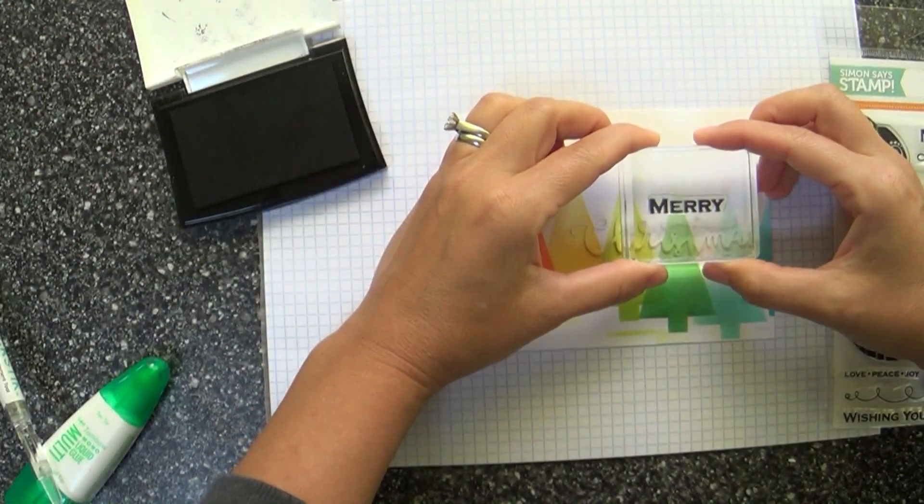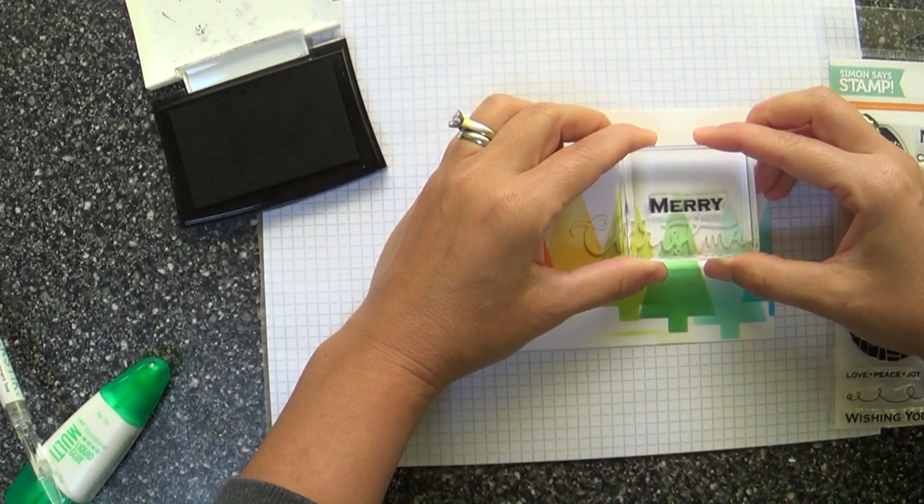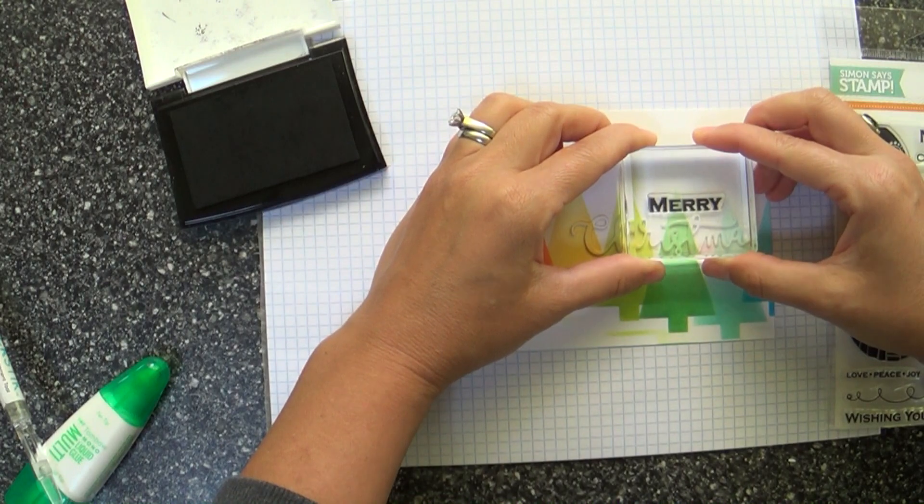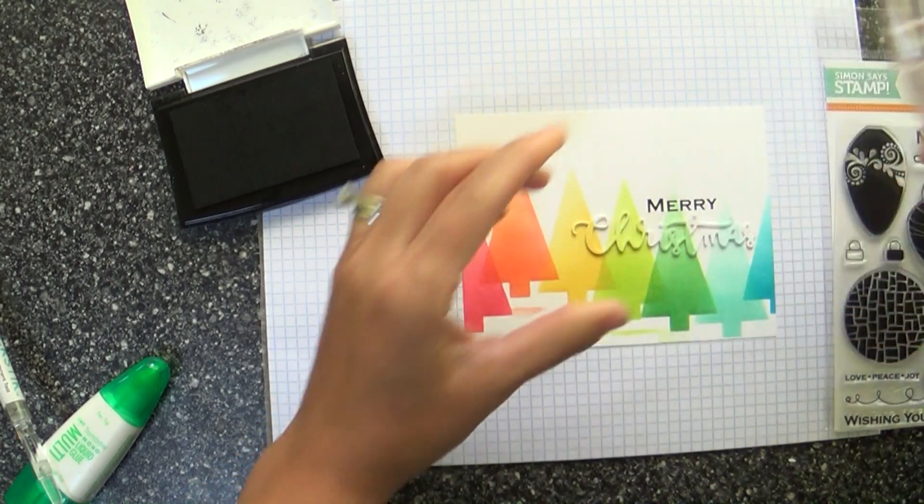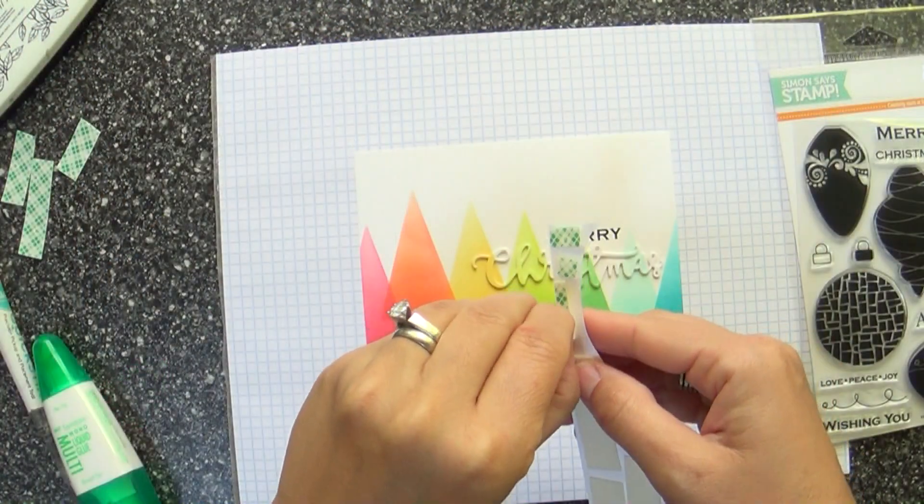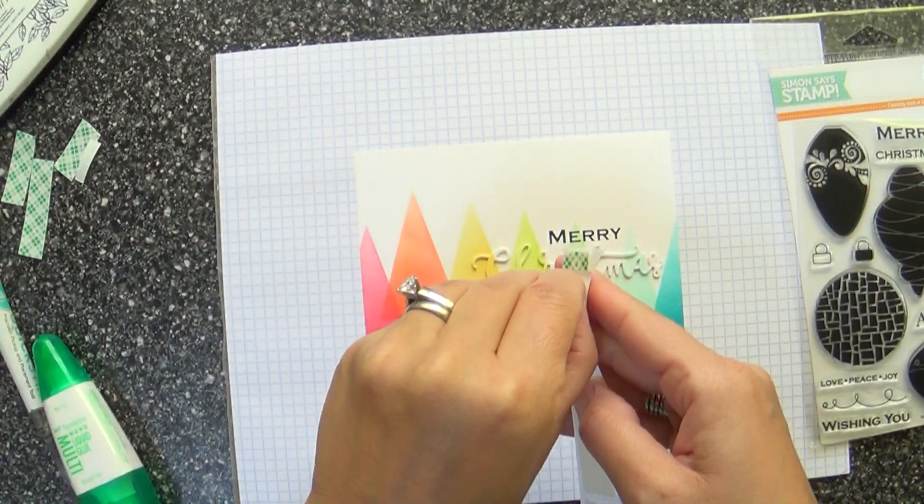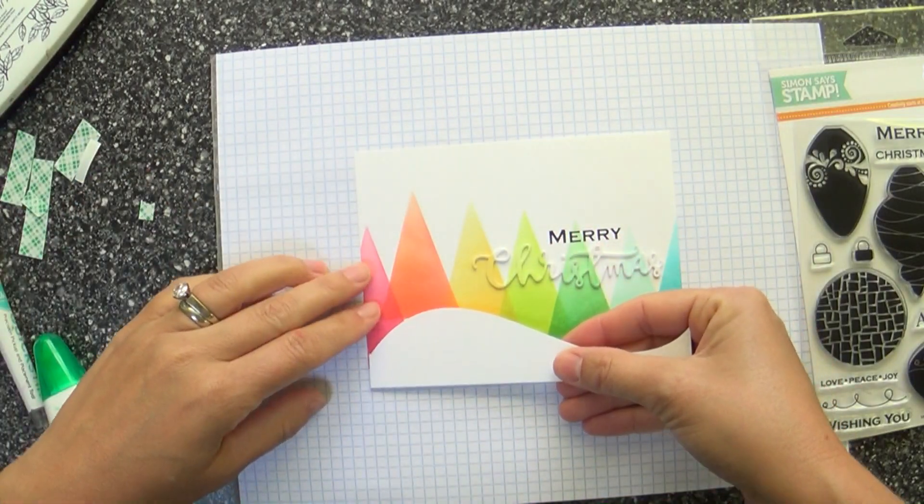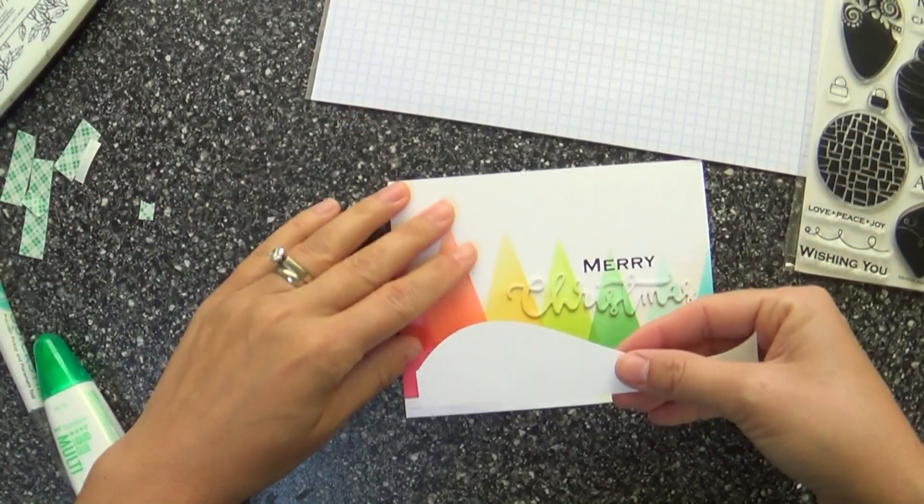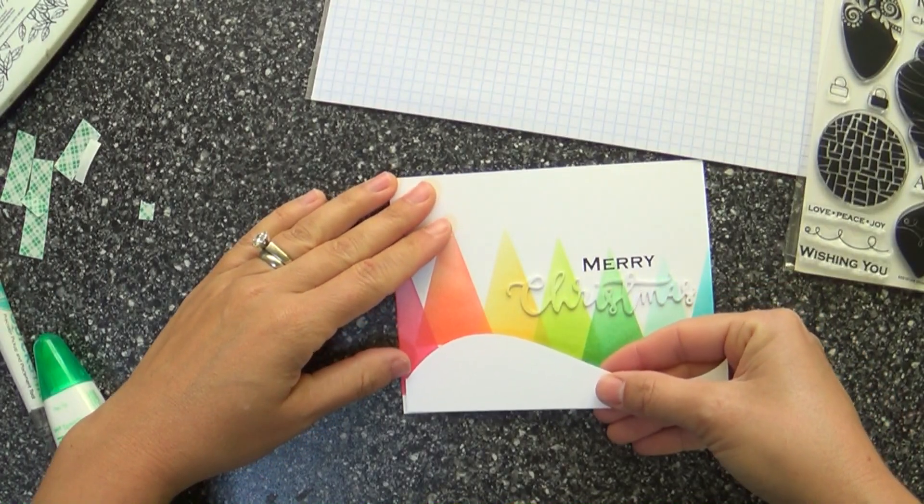Now I'm stamping a sentiment from the Ornaments stamp set—I'm just using that Merry word and stamping that with some VersaMark. That's pretty much it. I'm going to pop up my snowy hill. I just really love that pristine crisp white snowy hill and how it contrasts against those colorful bright gradient trees.